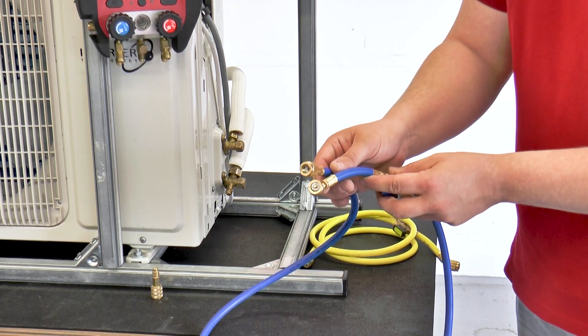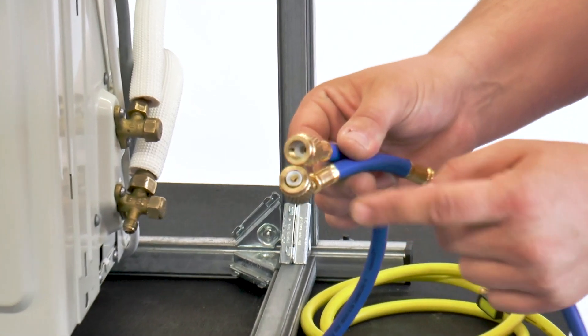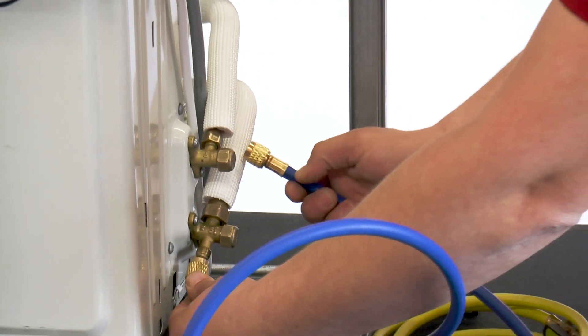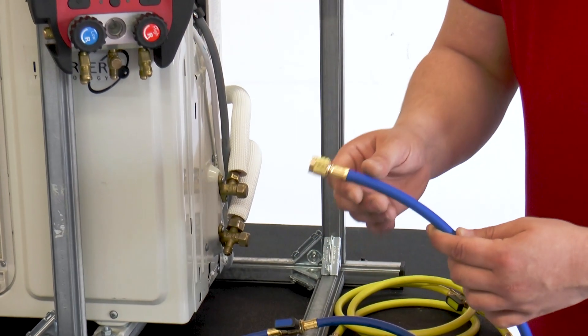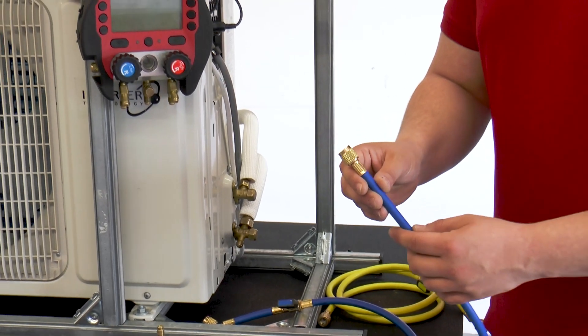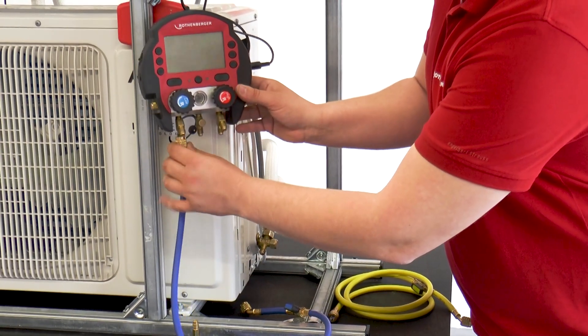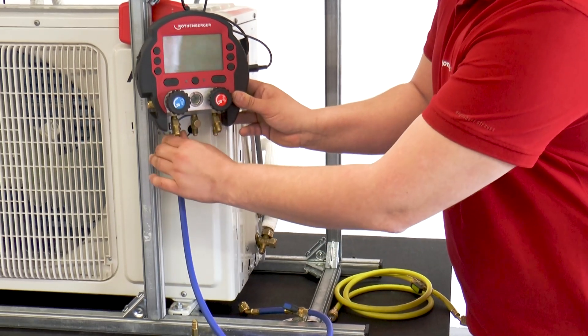When using the refrigerant hose, make sure that the side with the valve trigger is connected to the air conditioner. In this case, it is so that the valve trigger is in the curved part of the hose. Now, the other end without the valve trigger is connected to the Roll Cool. The free end is not yet connected to the air conditioner. The next steps will explain why.